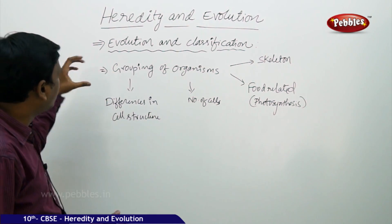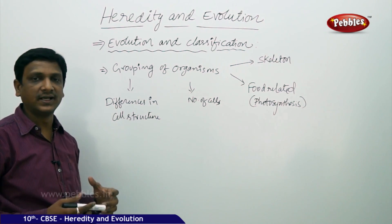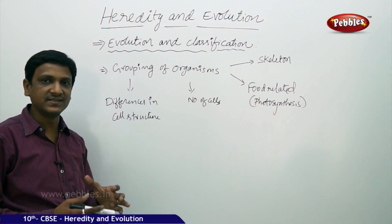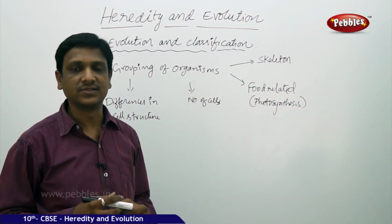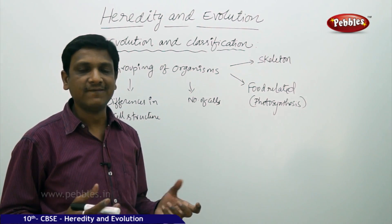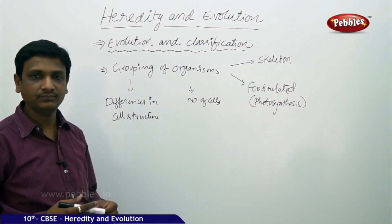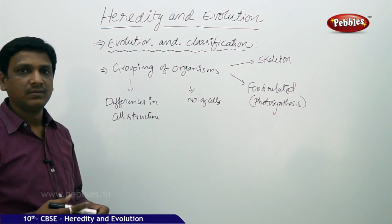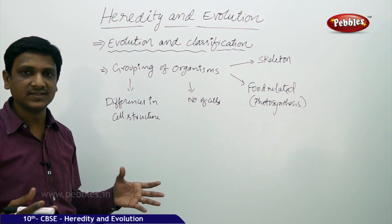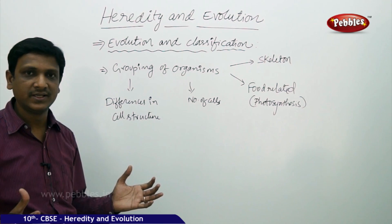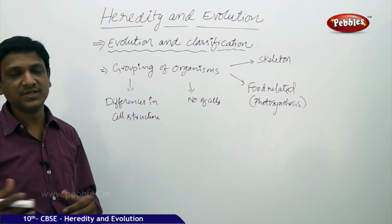Now let us understand how we study the process of evolution. We think that this much diversity of living organisms has come from the same group of ancestors. In fact, all this diversity might have come from a single ancestor. From generation to generation, because of so many reasons, organisms get divided, isolated, and accumulate variations — some helpful, some useless — and likewise new species are developed.